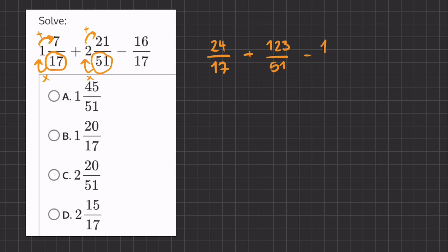And our last fraction, 16 over 17, is not a mixed number, so we can just write it how it is. And now we want to add and subtract, but the only thing stopping us is this fraction that does not have the same denominator.